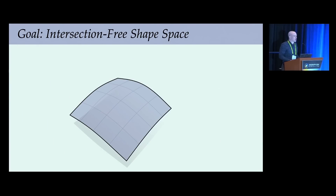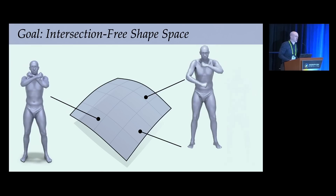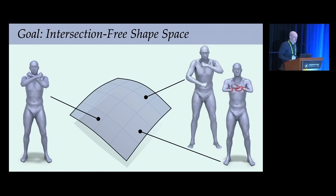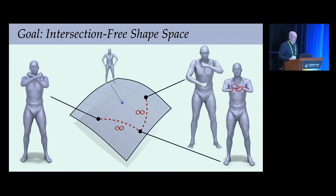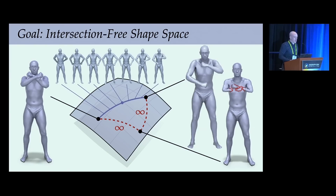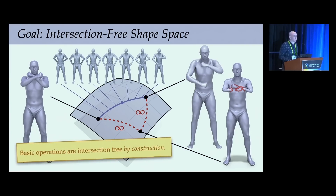What I want to develop today is a so-called shape space, where each point corresponds to a configuration of the shape, and such that shapes with intersections are infinitely far away from those without intersections. This way, all basic operations—like averaging, interpolation, or extrapolation—become intersection-free by construction.